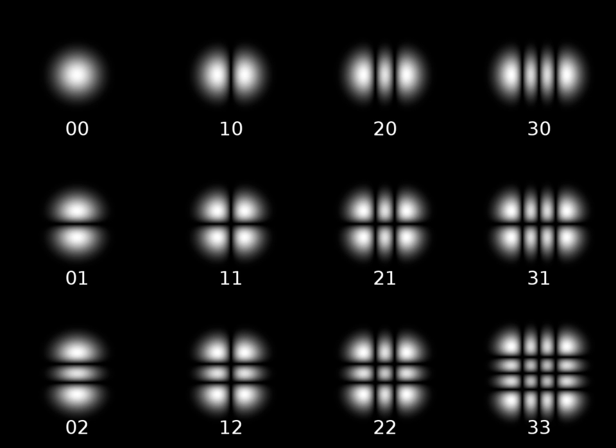Transverse modes occur in radio waves and microwaves confined to a waveguide, and also in light waves in an optical fiber and in a laser's optical resonator. Transverse modes occur because of boundary conditions imposed on the wave by the waveguide.